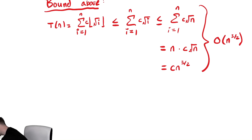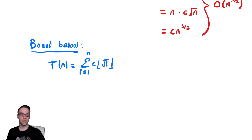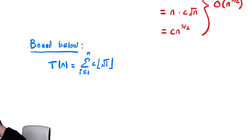We need to also bound it below and see how we can contend with the floor function there. To bound this below, we start by writing down the summation: T(n) is equal to the sum from i equals 1 to n of c times the floor of radical i. The floor of radical i is always greater than or equal to radical i minus 1, because rounding down just removes the decimal part. So this is greater than or equal to the sum from i equals 1 to n of c times radical i minus 1.